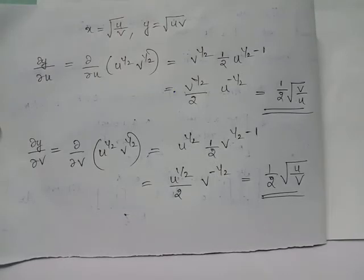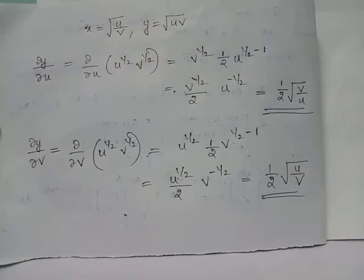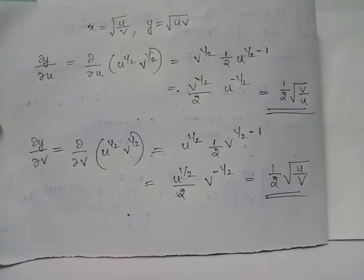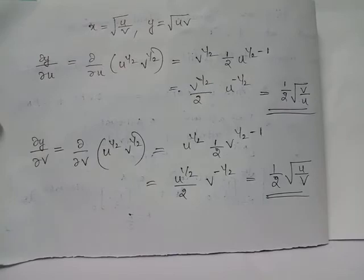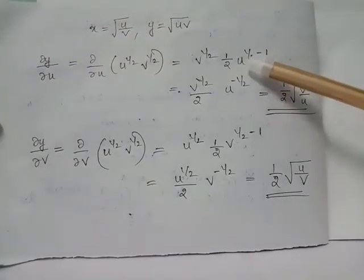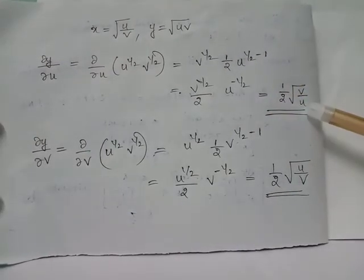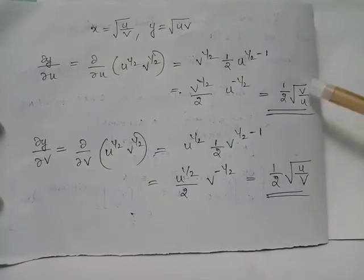To find ∂y/∂u, we apply ∂/∂u to y = u^(1/2) · v^(1/2), treating v as a constant. Applying the power rule to u^(1/2) gives 1/2 · u^(-1/2). Thus ∂y/∂u = 1/2 · √(v/u).